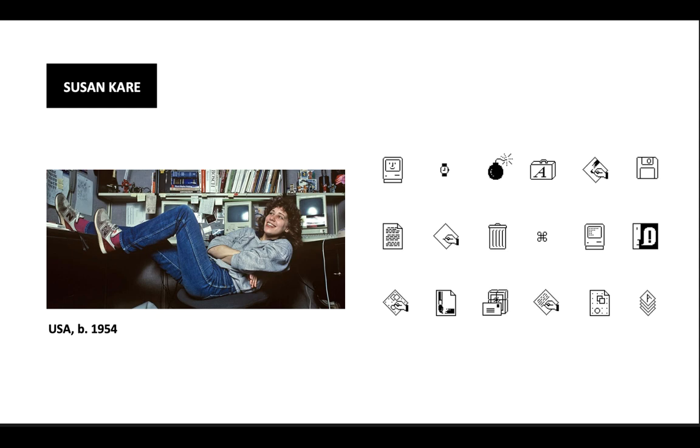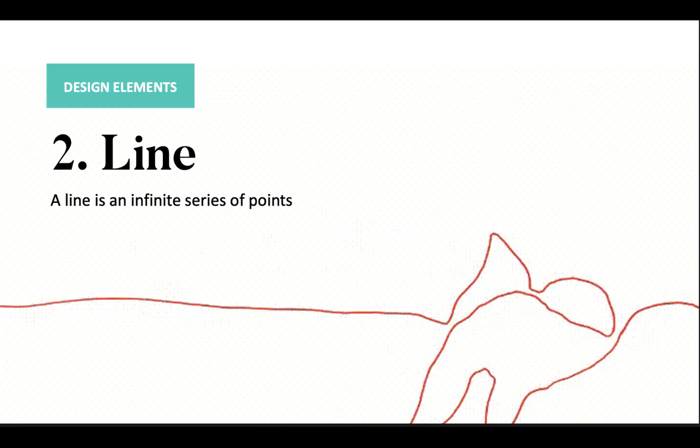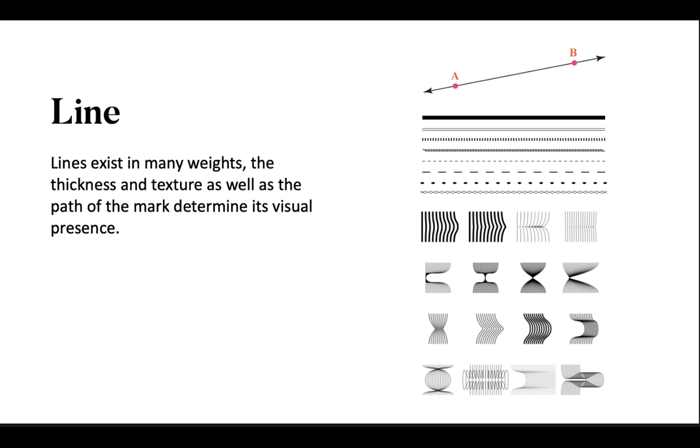The second design element is a line. A line is a series of points. A line is an infinite series of points and geometrically a line has length but no breadth or depth. A line is a connection between two points or is the path of a moving point. A line can be a positive mark or a negative gap. Lines exist in many weights.